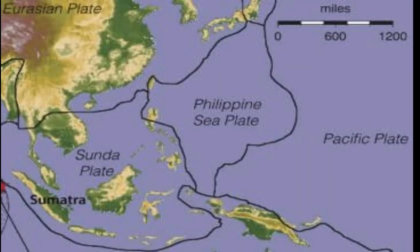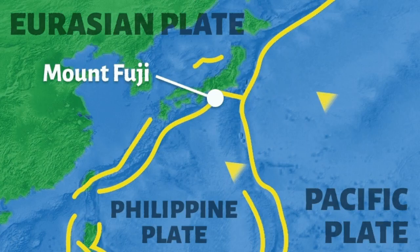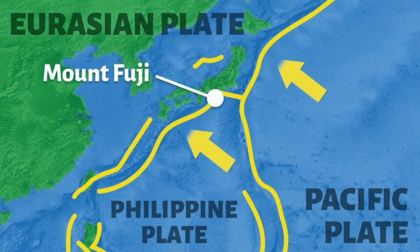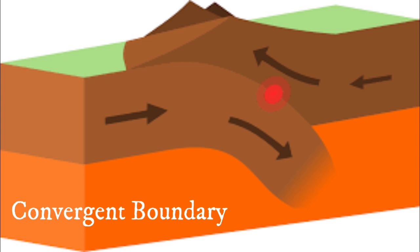Let's take the case of the Philippine plate and the Eurasian plate. You will notice that the two plates are moving toward each other. This is an example of a zone where plates collide, and this second type of plate boundary is called convergent plate boundary.